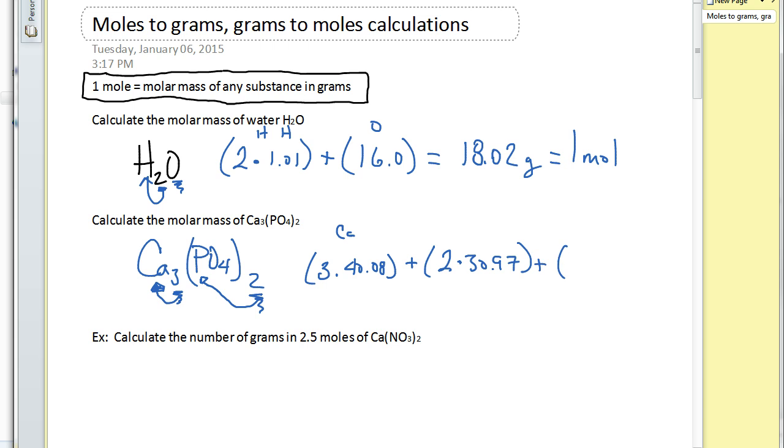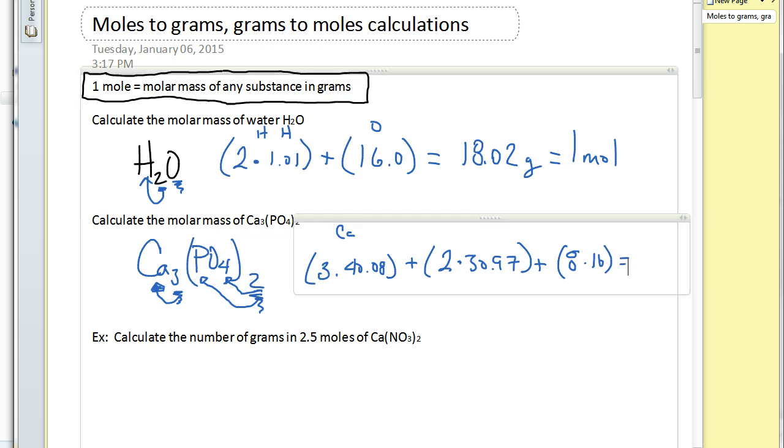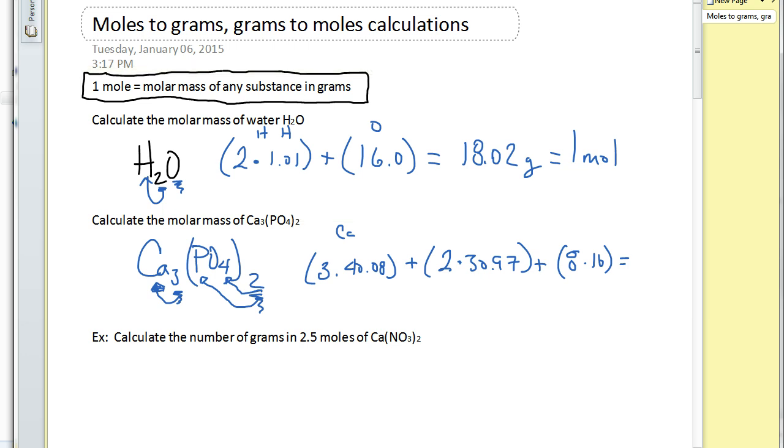And we're going to add that to this 2 again distributes through to the oxygen because there's already 4 in there. It's going to be 4 times 2 so it's going to give me 8 oxygens. Oxygen's molar mass is 16 and then I'm going to go through and I'm going to punch this into my calculator in just this way. And the answer I got there is I got 310.18 grams which are going to be equal to 1 mole of calcium phosphate.